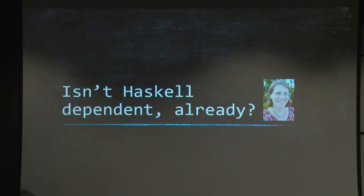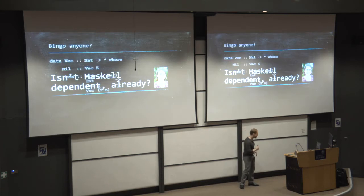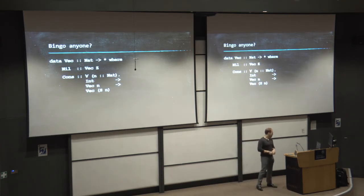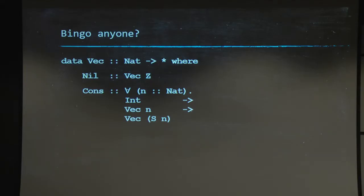So about this claim that Haskell is maybe already dependent, let's have a look at the example I hope you guys are all waiting for, vectors. Great. So here's what they look like in Haskell, and here, Stephanie is right. You can actually write that code in Haskell already. You may need a few type extensions, but essentially, you can.